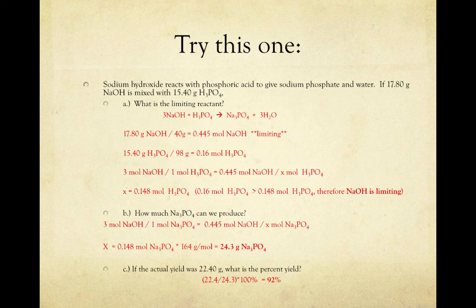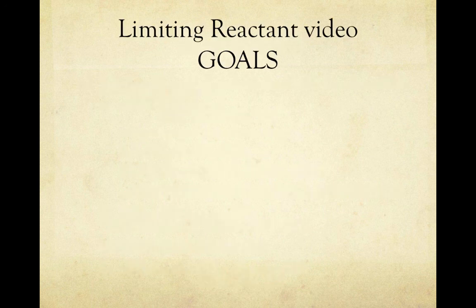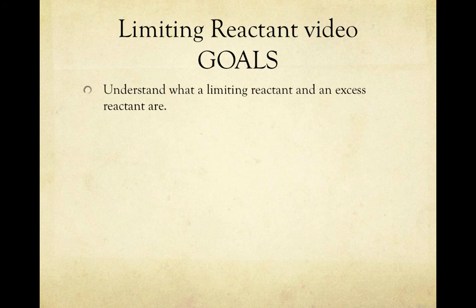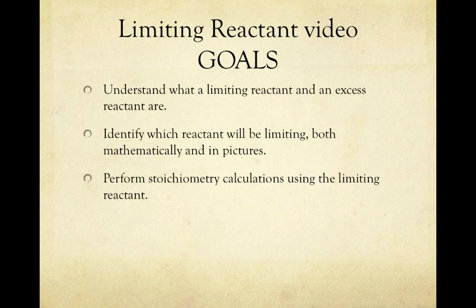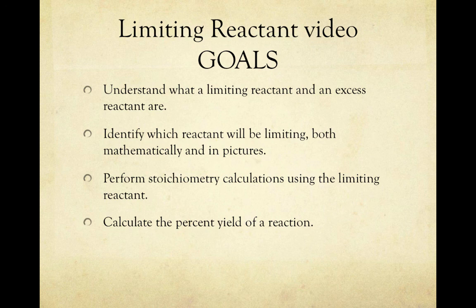Welcome back. Here's what you should have gotten. That brings us to the end of this video. Let's review our goals. First, we defined a limiting reactant as the reactant that runs out first, therefore limiting the amount of product we formed, and the excess reactant as the reactant that we'll have extra of, so some will be left over. Then we looked at how to determine which reactant will be limiting, both mathematically by converting to moles and comparing the ratios, and in pictures by figuring out what's left over after the reaction. Then we learned to perform stoichiometric calculations using the limiting reactant. Finally, we learned to calculate the percent yield of a reaction by dividing the actual yield by the theoretical yield.